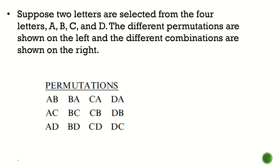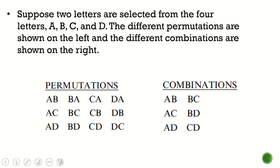So A, B is one arrangement and B, A is another arrangement. On the other hand, when we talk about combinations, A, B and B, A are the same. C, A and A, C are different in permutations, but in combinations they're the same — counted as one. B, C and C, B are different in permutations, but in combinations B, C and C, B are the same. So that gives us a clear distinction between those two.